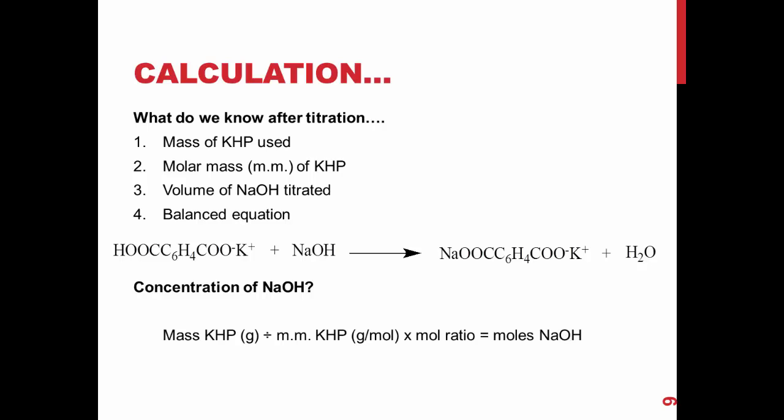First, you can calculate the moles of sodium hydroxide by dividing the mass of KHP used by the molar mass of KHP and multiplying by the molar ratio from the balanced equation. In this case, it is 1 to 1.